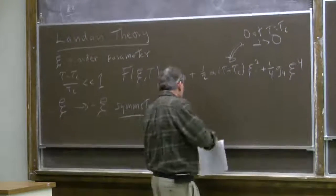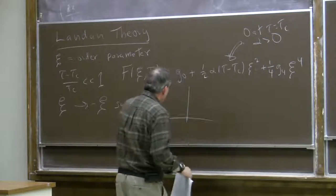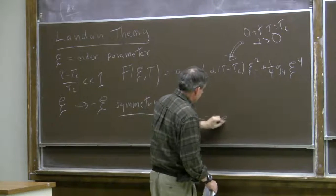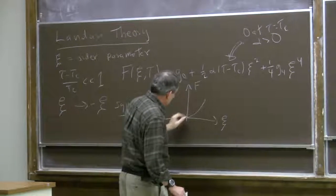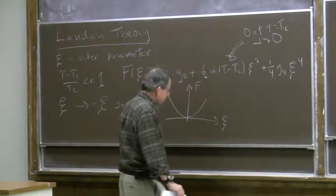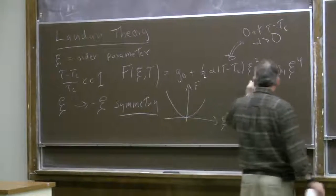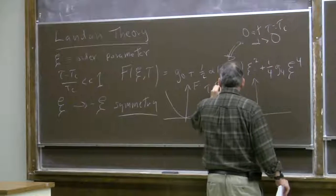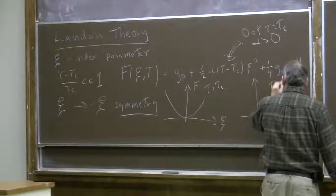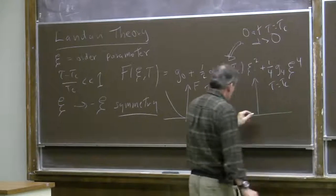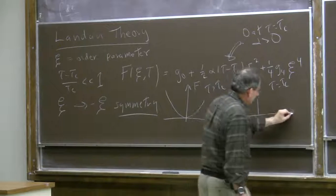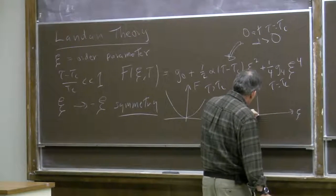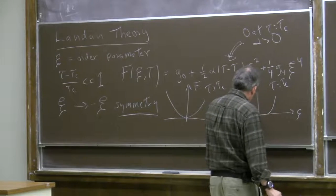When the temperature is above the critical temperature, the free energy as a function of order parameter is quadratic in leading order. Right at the critical temperature — so this is for tau greater than tau_c — right at the critical temperature, the free energy as a function of order parameter has no quadratic term, only a quartic one, so it gets very flat.